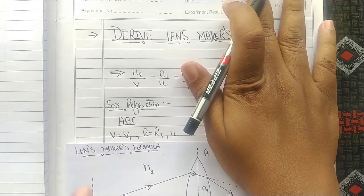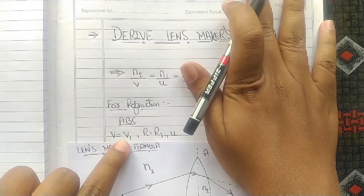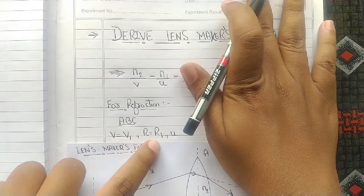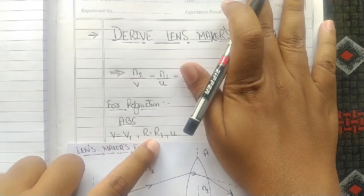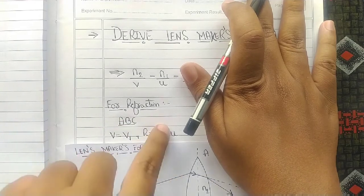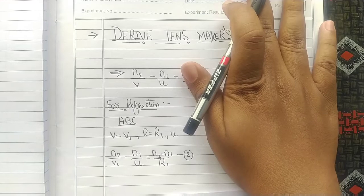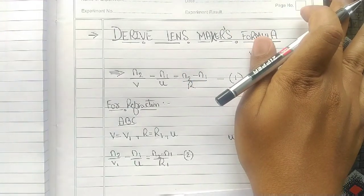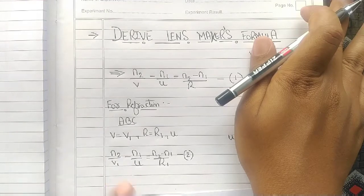The image distance for the first case is V1 and the radius of curvature for the first case is R1 and object distance is U. So, substitute these things in the main equation. That's simple.